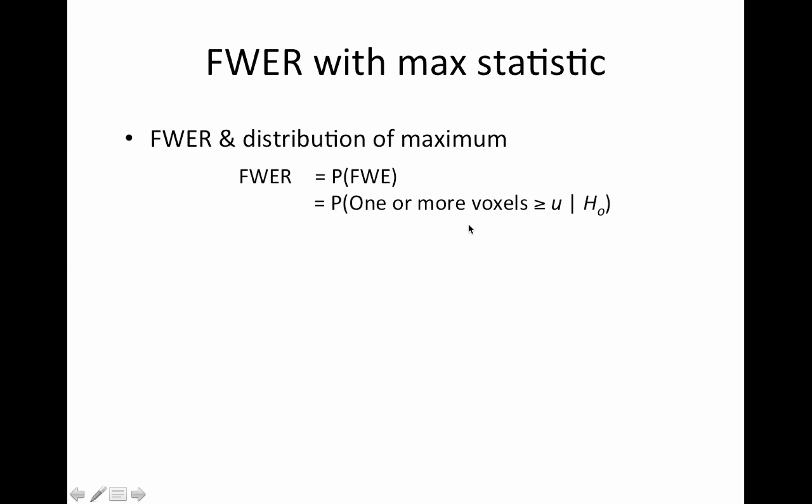So that's this: one or more voxels being larger than our threshold U. So we're trying to choose U so that we can control this overall probability, the probability that one or more voxels exceeds that threshold given the null.